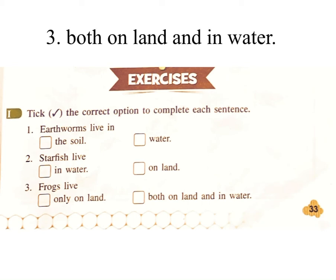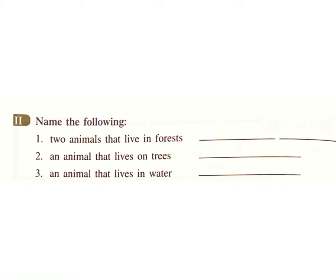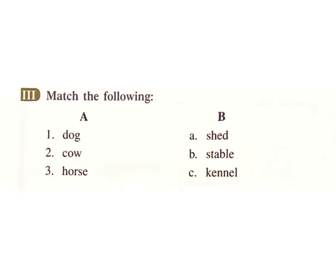Three — frogs live: only on land, both on land and in water. Answer: both on land and in water. Two: Name the following. One — two animals that live in forests. Answer: tiger and lion. Two — an animal that lives on trees. Answer: monkey. Three — an animal that lives in water. Answer: fish.